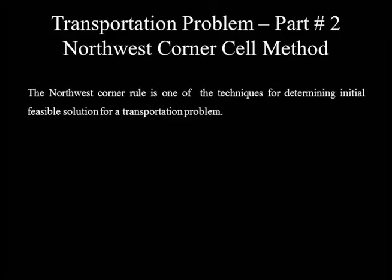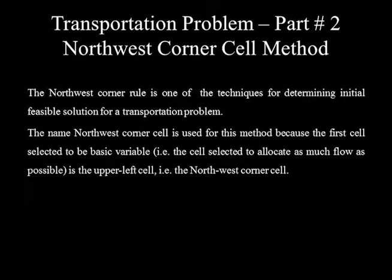The Northwest Corner Rule is one of the techniques used for determining the initial feasible solution for a transportation problem. The name Northwest Corner is used because the first cell selected as a basic variable — the cell allocated as much flow as possible — is the upper left corner cell, that is the Northwest corner cell. For better exposition of the steps involved, let's start with an example.